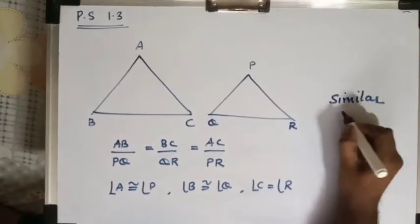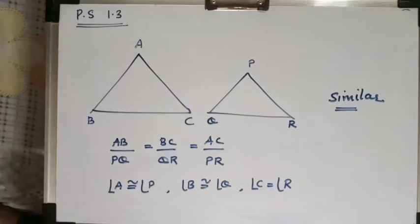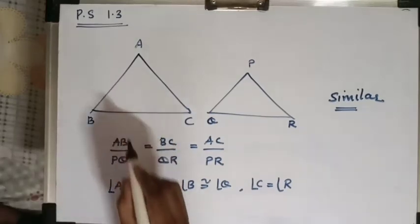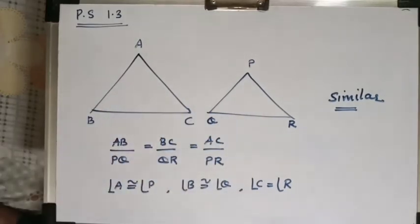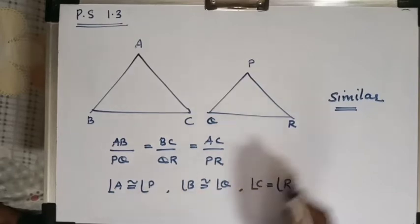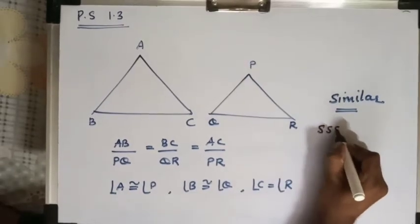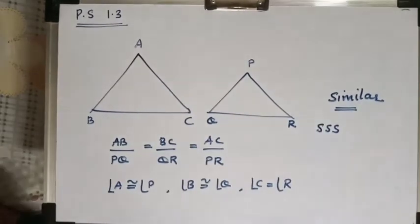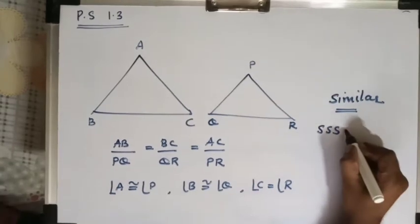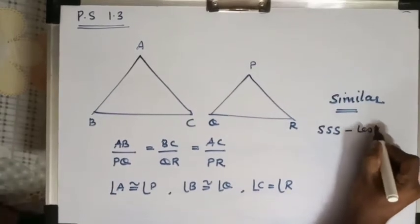Two triangles are said to be similar when the sides are in proportion and the angles are congruent. If all three sides are in proportion, then the triangles are said to be similar by the SSS test.